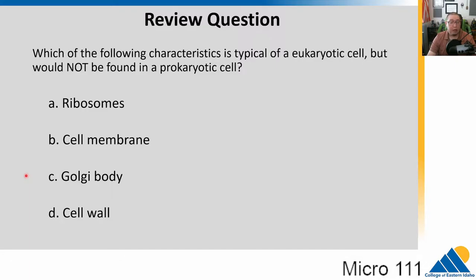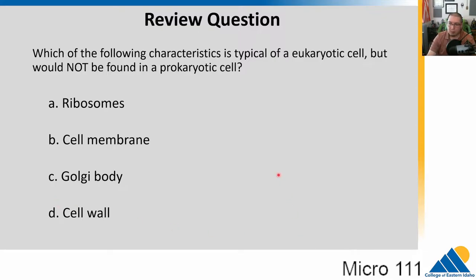Hopefully you got this one. The Golgi is only found in eukaryotes, not prokaryotes, because it is one of our organelles. To be a cell, it has to have a cell membrane, so all cells have these. All cells have ribosomes, which make proteins, and many prokaryotes have a cell wall. Many eukaryotes don't have a cell wall — fungi and plants do, animals don't.